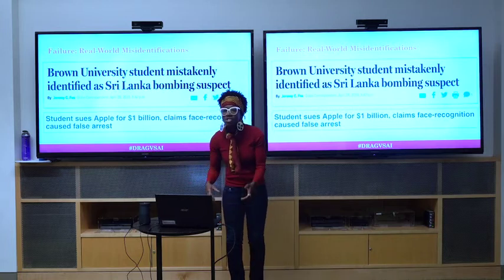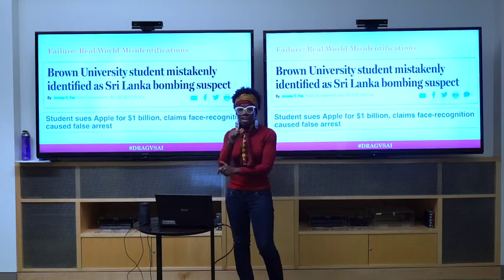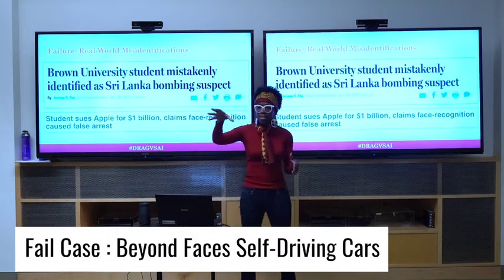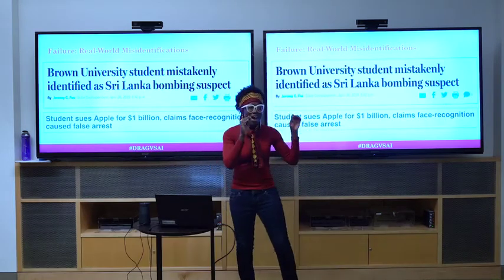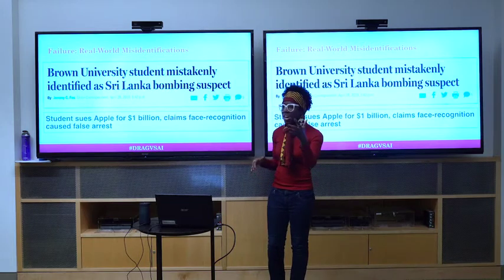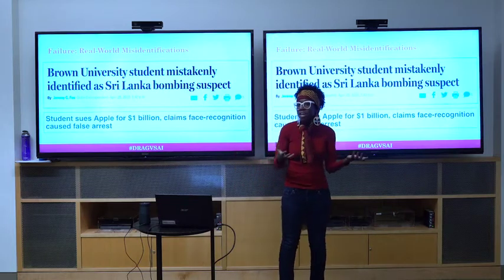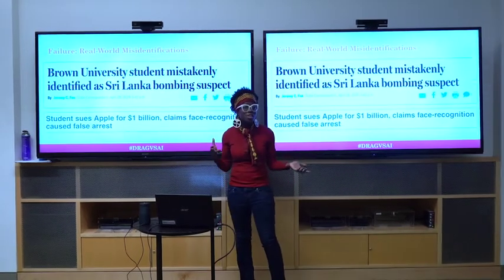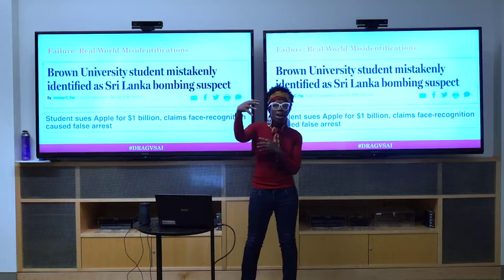Misidentifications are an issue. And we also have to think that these technologies aren't just about faces — computer vision systems also try to detect bodies. Think of a self-driving car: self-driving cars are supposed to make roads safer, but a study from Georgia Tech showed that if you have darker skin, you're less likely to be detected. Not being detected can be an issue here, though you might not want to be detected when this technology is used for surveillance. There are costs of inclusion and costs of exclusion, so we have to be careful about how we move forward.